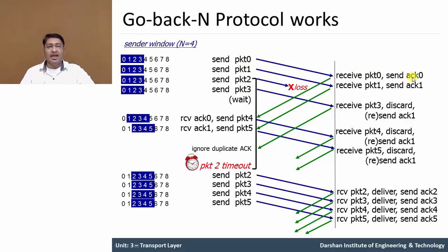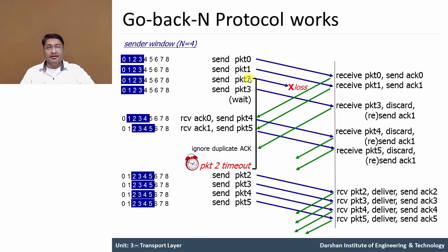Packet 0 is received and acknowledgement 0 is sent. Packet 1 is received and acknowledgement 1 is sent. In case packet 2 is lost during transmission, it is not received at the receiver. Without waiting for acknowledgement, the sender sends packet 3. The receiving side receives packet 3 but discards it and resends acknowledgement 1, meaning the last correctly received packet was packet 1. After a timeout period at the sender, packet 2 times out.